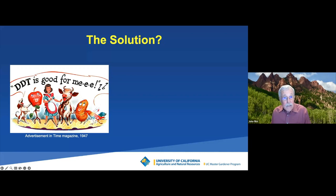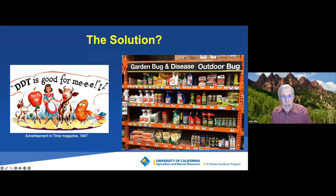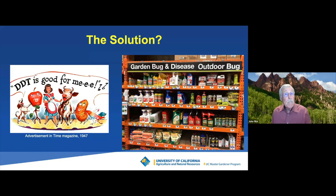If you go to a garden store, there are lots of chemicals available — they want to sell you chemicals. Keep in mind that insecticides are designed to do one thing: to kill something. So you need to use them very carefully. Not all chemicals are like DDT. There are some that are more benign, and I'll talk about them towards the end. But there are still quite a number of very powerful organophosphate compounds that can be very damaging to good bugs and to other animals as well.